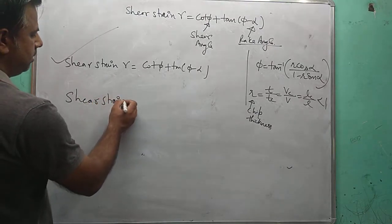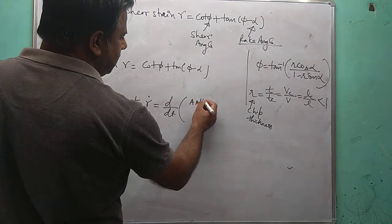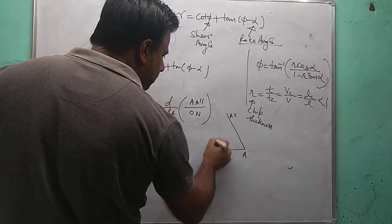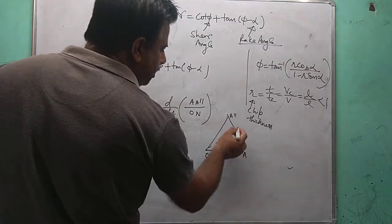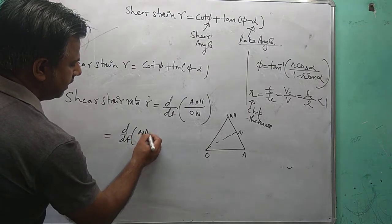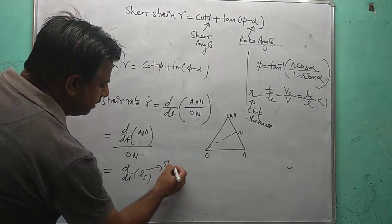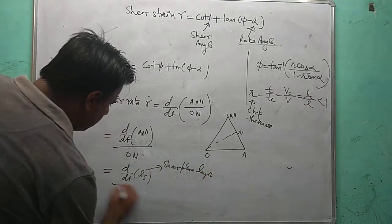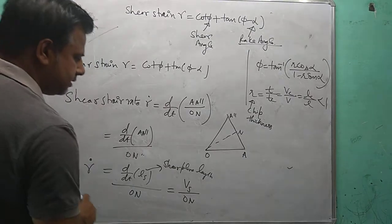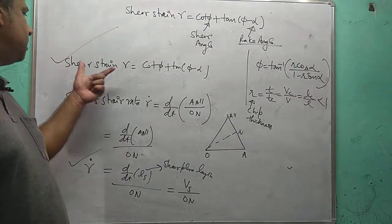For shear strain rate, gamma-dot, taking the derivative of A-A-double-dash over O-N with respect to time, the shear plane length derivative gives shear velocity over the perpendicular distance to the shear plane. So the shear strain rate is nothing but shear velocity over the perpendicular distance. In this way you can calculate the shear strain and shear strain rate.